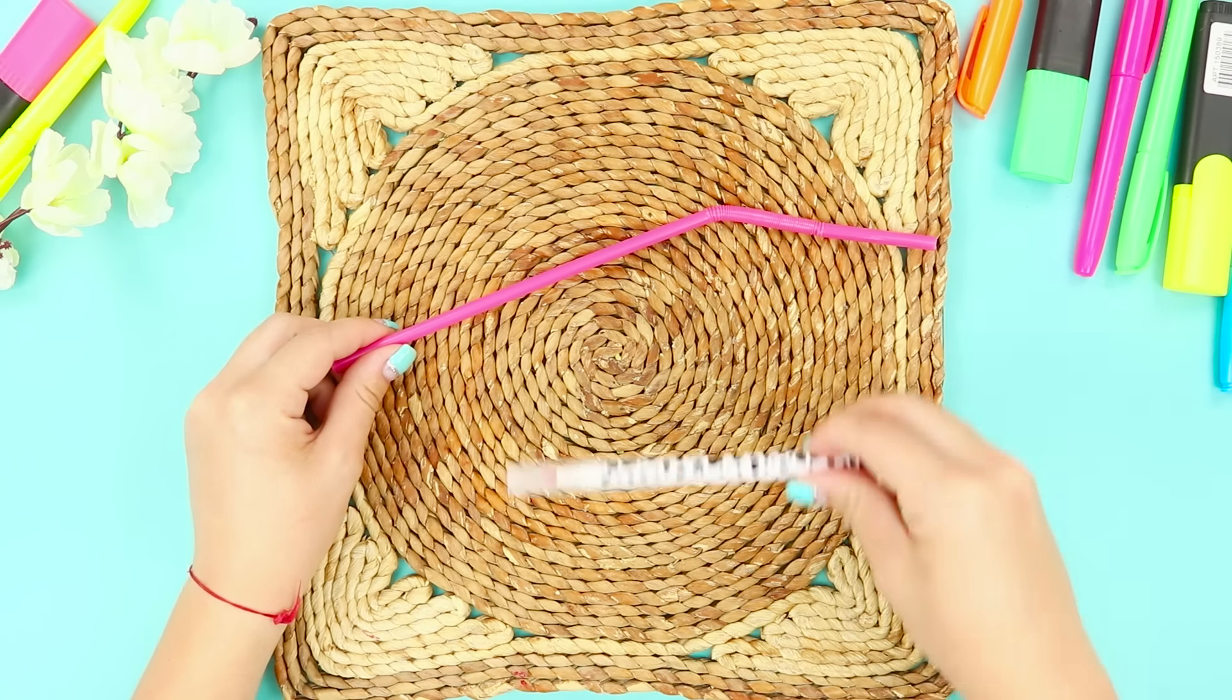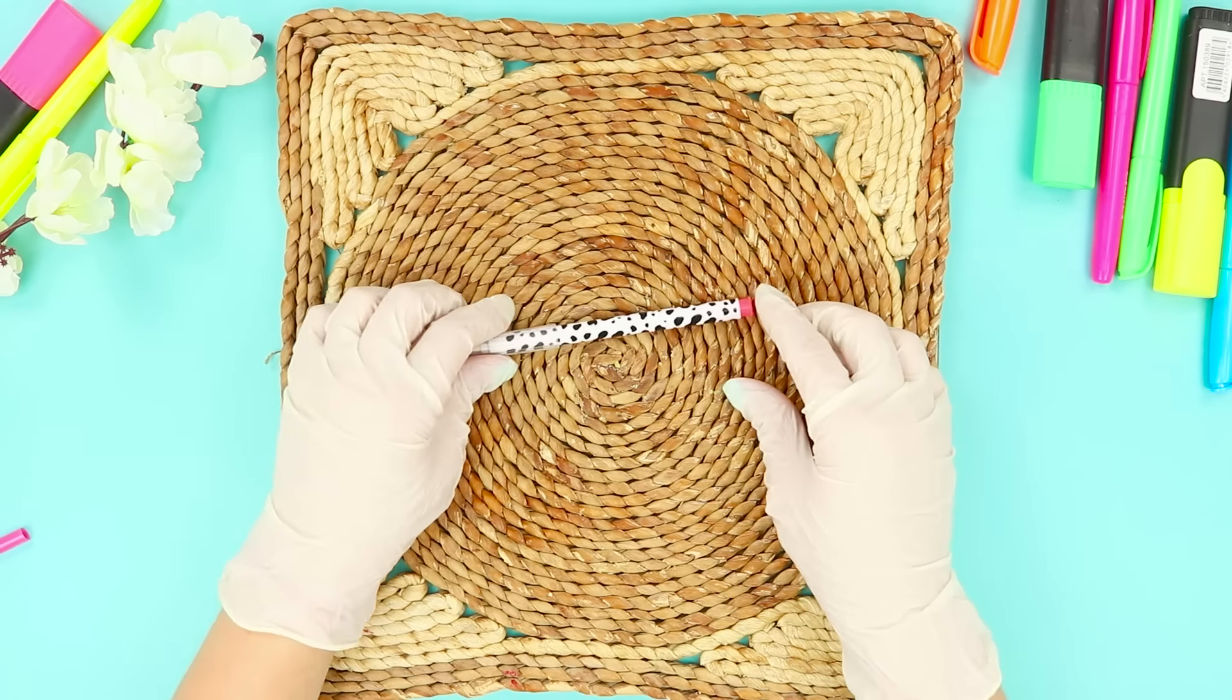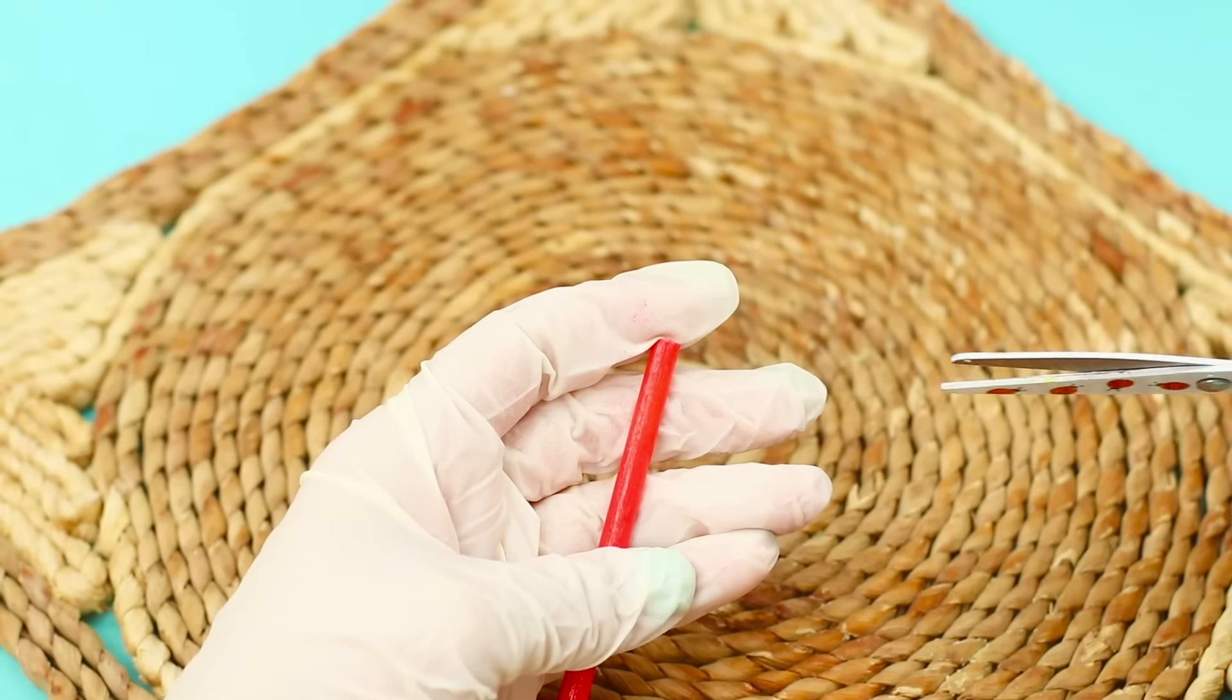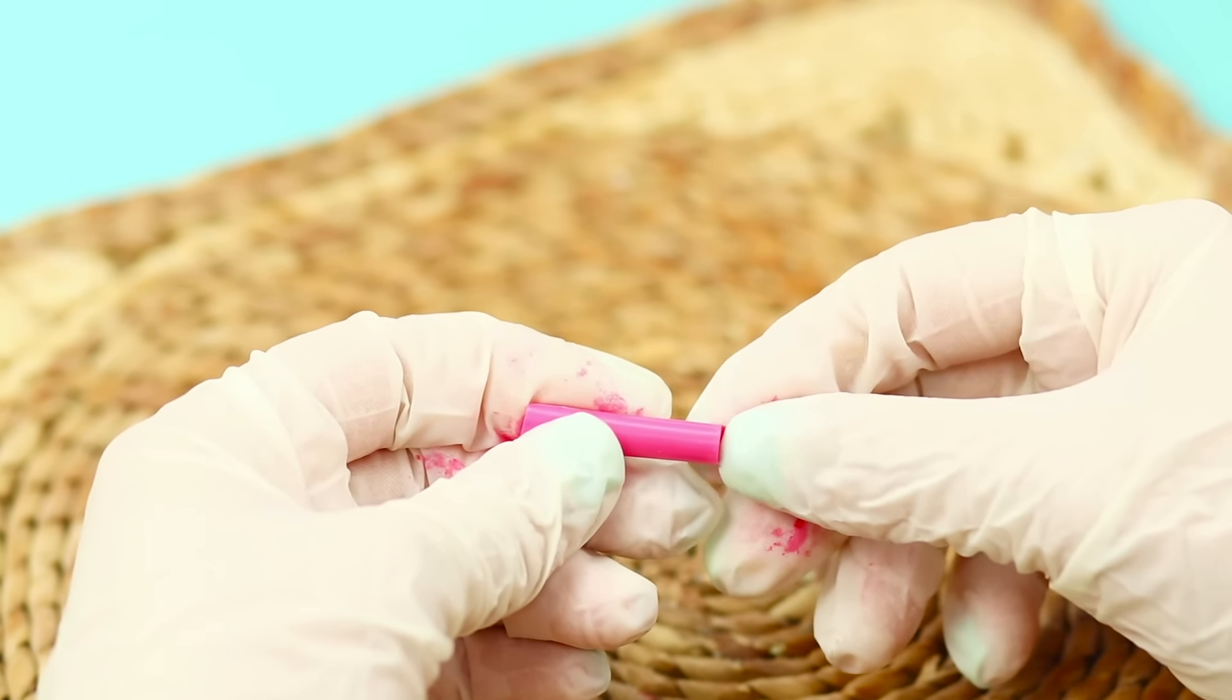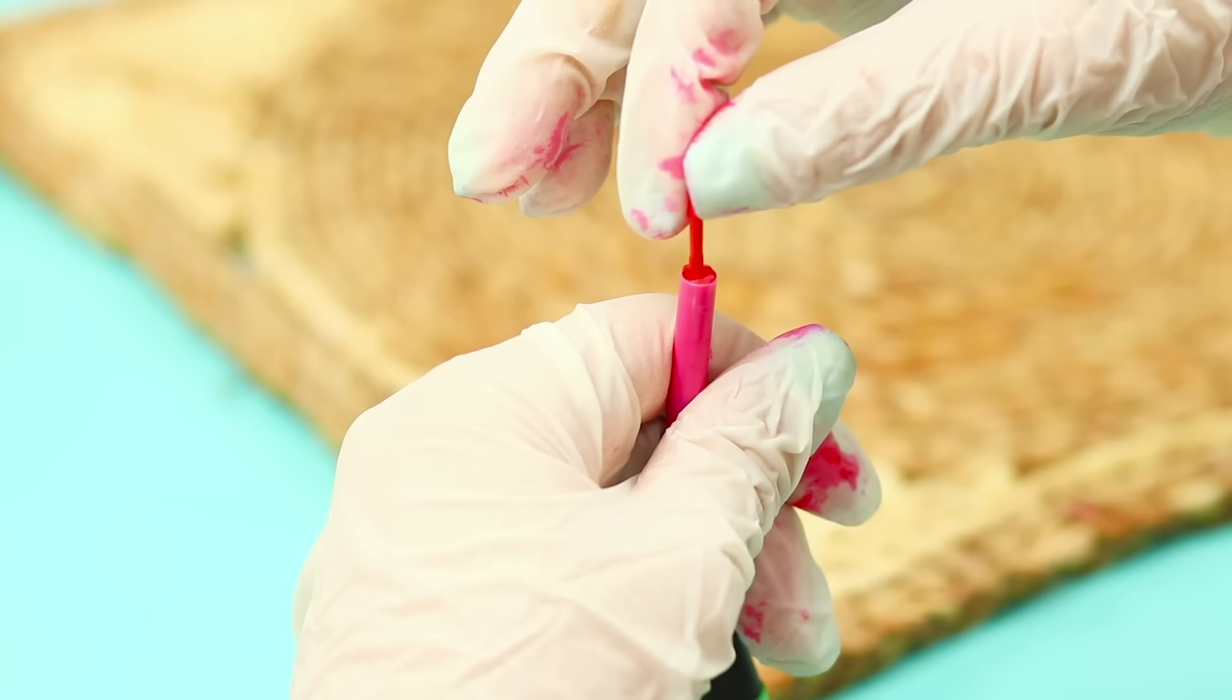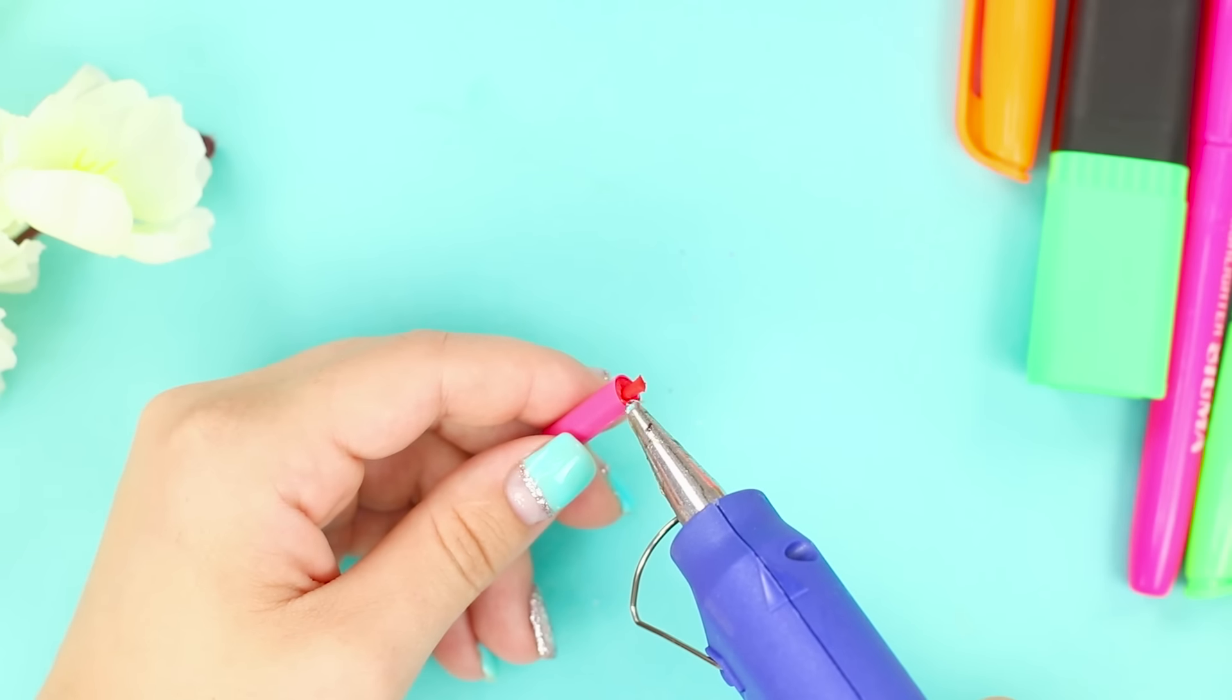Next, take a straw and a marker. Cut off a small piece of the straw. Remove the back cap from the marker and pull out the rod. Cut off part of the rod to the size of the straw. Put it inside. And now take off the tip of the marker and insert it into the new, smaller version. Seal it with hot glue.